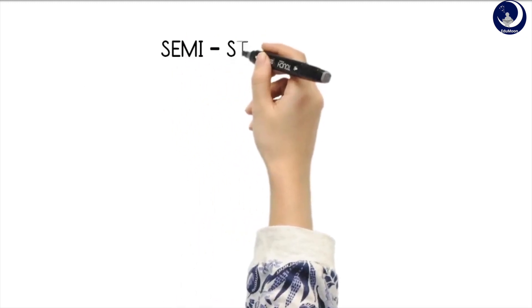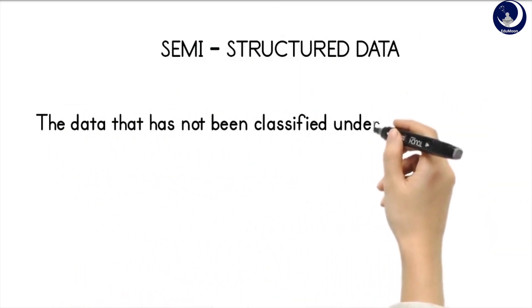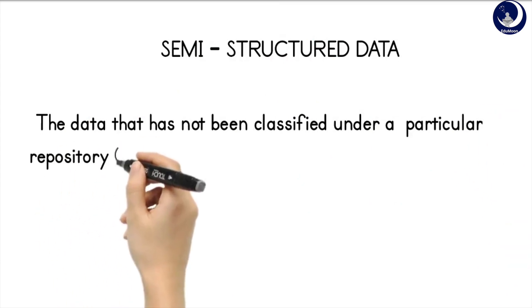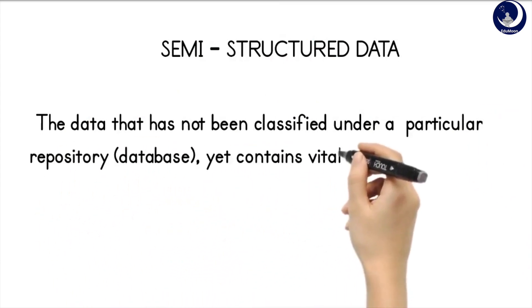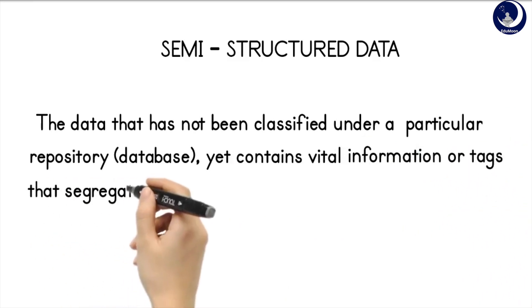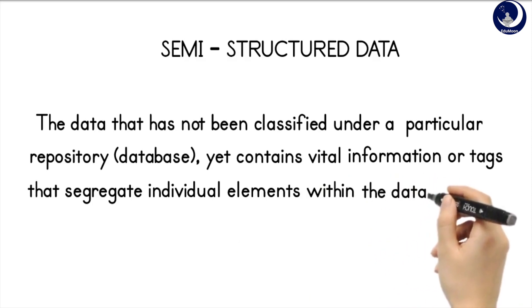Semi-structured data is the third type of Big Data. It pertains to the data containing both the formats discussed, that is, structured and unstructured data. To be precise, semi-structured data refers to the data that has not been classified under a particular repository database, yet contains vital information or tags that segregate individual elements within the data.